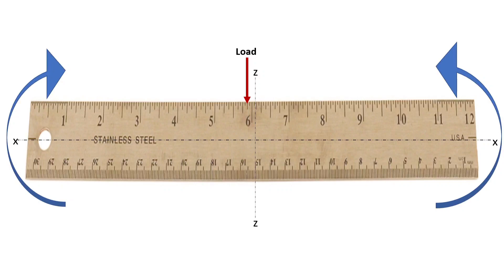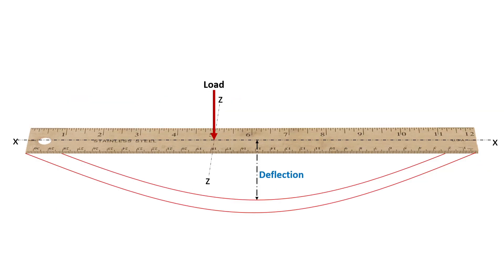If you try to bend the scale with the width in the vertical position, you will find it difficult to bend and any bending that occurs will be minimal. If you turn the scale with the width in the horizontal plane and try to bend it, you will be able to deflect it easily until it breaks.